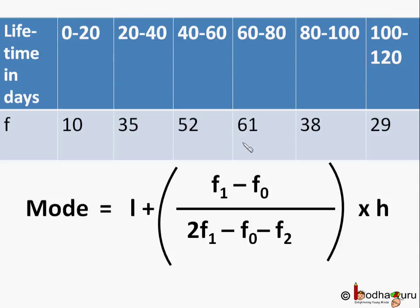F1 equals the frequency of the modal class, which is 61. F0 is the frequency of the class preceding the modal class, which is 52. And F2 equals the frequency of the class succeeding the modal class, which is 38.